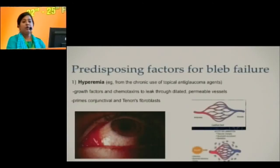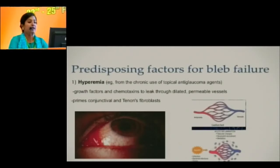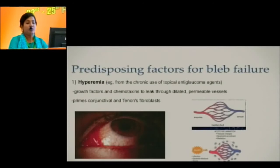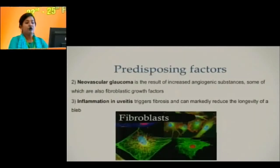Regarding predisposing factors for bleb failure: there can be hyperemia because of chronic use of topical anti-glaucoma medication. This can result in leakage of growth factors and chemotaxins through these dilated and permeable vessels, which primes the conjunctival and tenon fibroblasts. In neovascular glaucoma patients, there can be increased angiogenic substances released, some of which have fibroblastic growth factors in them.